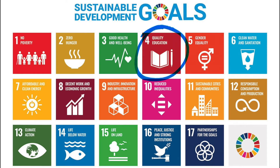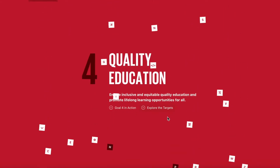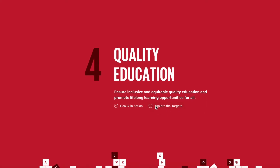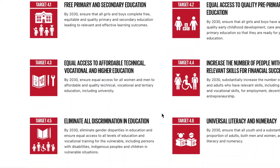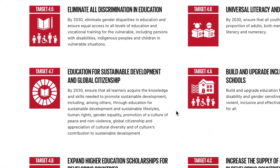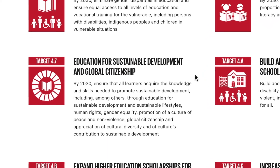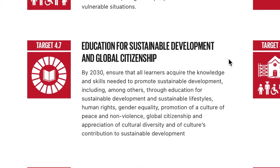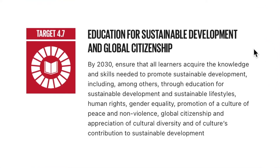Sustainable Development Goal 4 focuses on education and challenges us to ensure inclusive and equitable quality education and promote lifelong learning opportunities for all. Within this broad goal, Target 4.7 calls on us to ensure all learners acquire knowledge and skills needed to promote sustainable development, including through education for sustainable development and sustainable lifestyles, human rights, gender equality, promotion of a culture of peace and non-violence, global citizenship, and appreciation of cultural diversity and of culture's contribution to sustainable development.